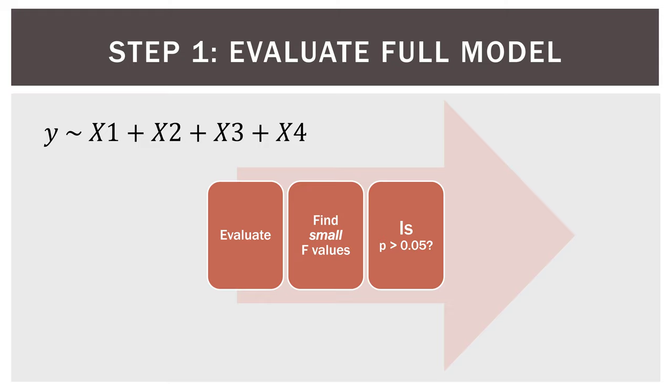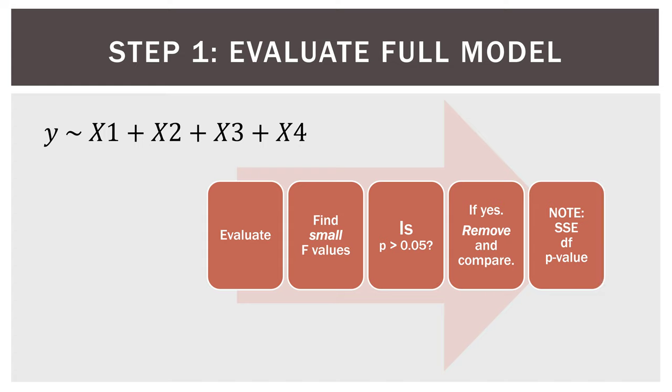Then we ask, is the p-value, the probability, greater than, in this case, 0.05? Before, in forward selection, we're looking at the probability of less than 0.05. Here's the opposite. We're looking for high probabilities. If yes, then we remove that variable and compare what we have left. We know our SSE, our degrees of freedom, and our p-value. Now to reiterate, this p-value threshold is completely up to us. It's up to the analyst. We can set it very low or very high, depending on how strict or liberal we want to be in rejecting variables. And there are other criteria besides p-value that can be used. But to keep it simple for these modules, we're just going to go ahead and keep it at p-value.